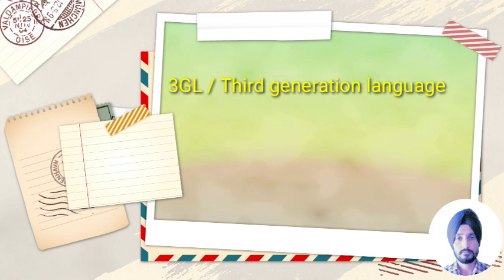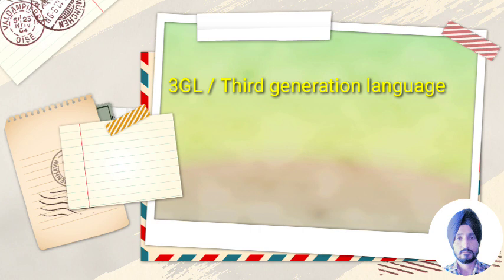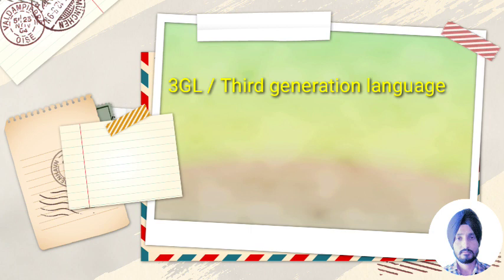The first and second generation languages are both low-level languages. The third generation language is where high-level languages began — languages like C, C++, Basic, and Java are all third generation languages. In these languages, programs can be written for any computer or operating system, making them platform independent. It is easy to write programs in 3GL because we don't need to remember any codes — we can write programs directly in English words.